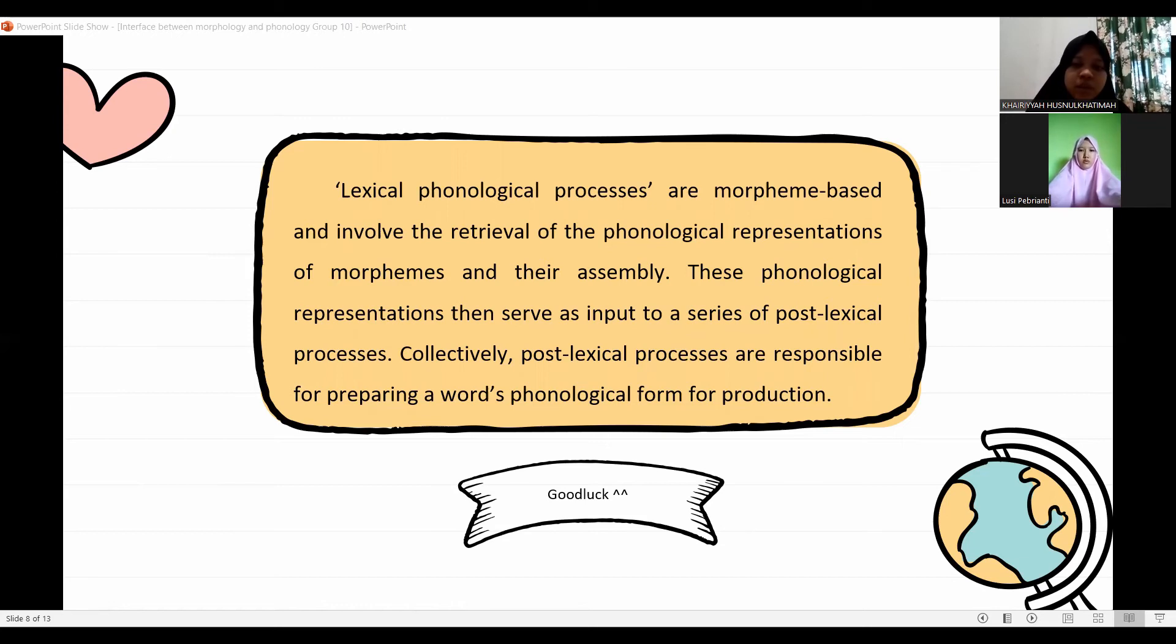These phonological representations then serve as input into a series of post-lexical processes. Collectively, post-lexical processes are responsible for preparing a word's phonological form for production. Theories of spoken production typically hold that post-lexical processing involves at least two types of processing: phonological retrieval or encoding where processing occurs primarily over segmental representations, and phonetic encoding where processing occurs primarily over articulatory gestures.